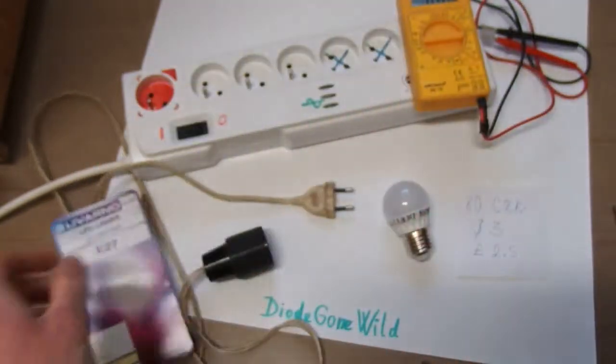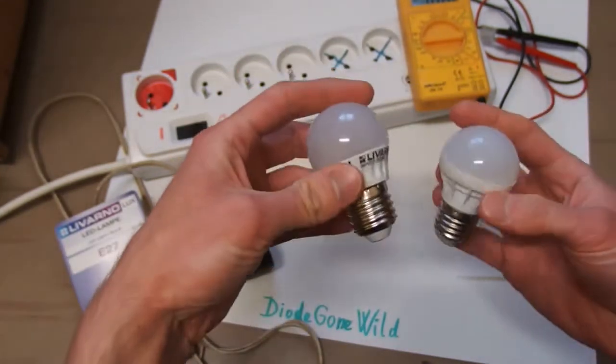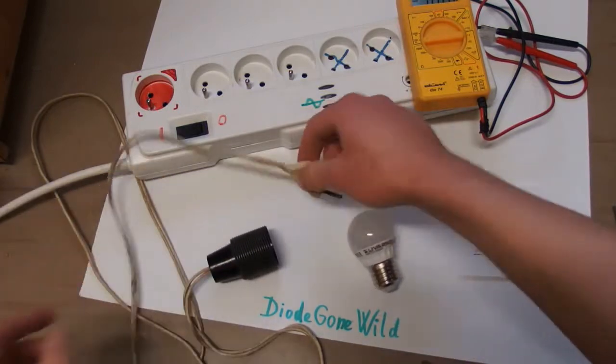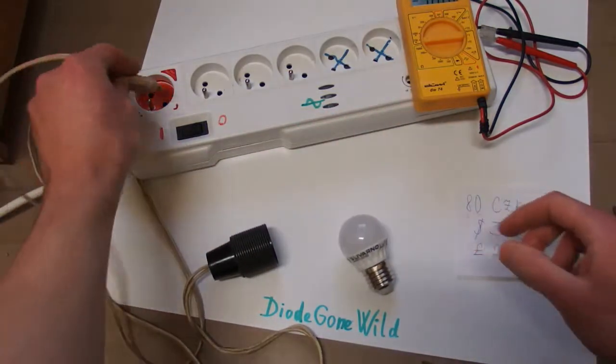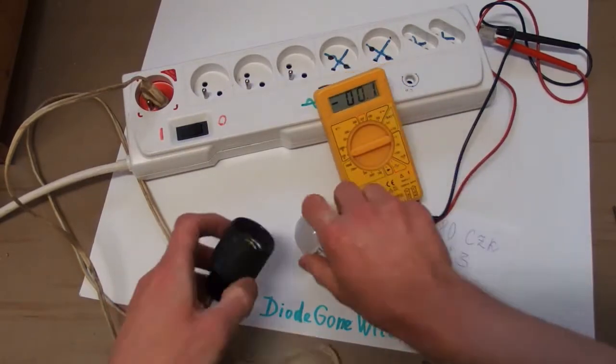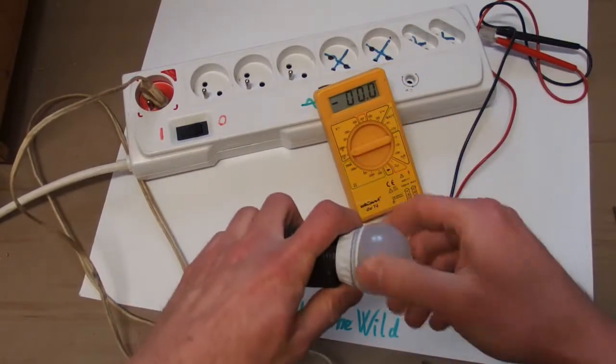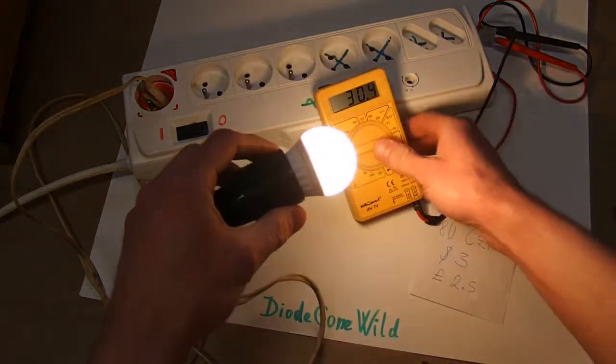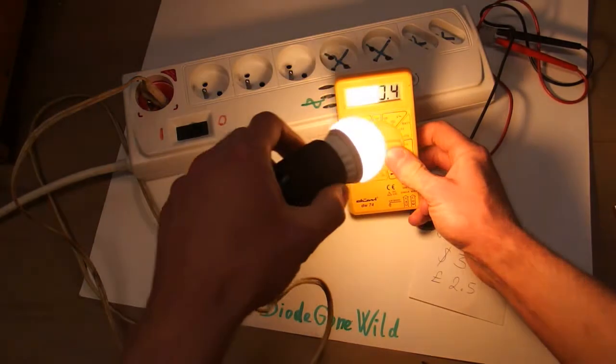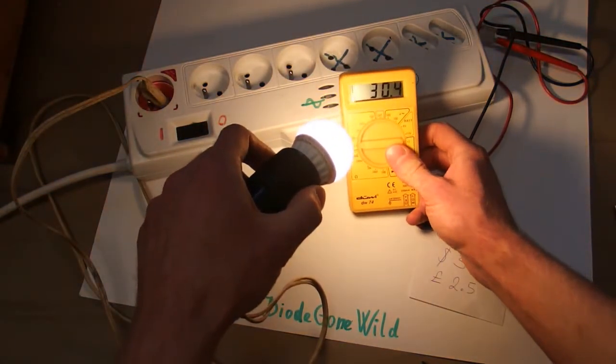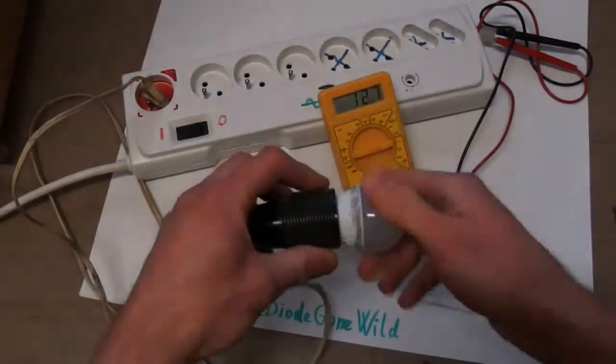So is it really better than the Chinese one from eBay? Let's compare it. First I will measure the power because the Chinese one had barely half of the rated power. And this one, it is 3.04 watts, so that's very close to the rated power.